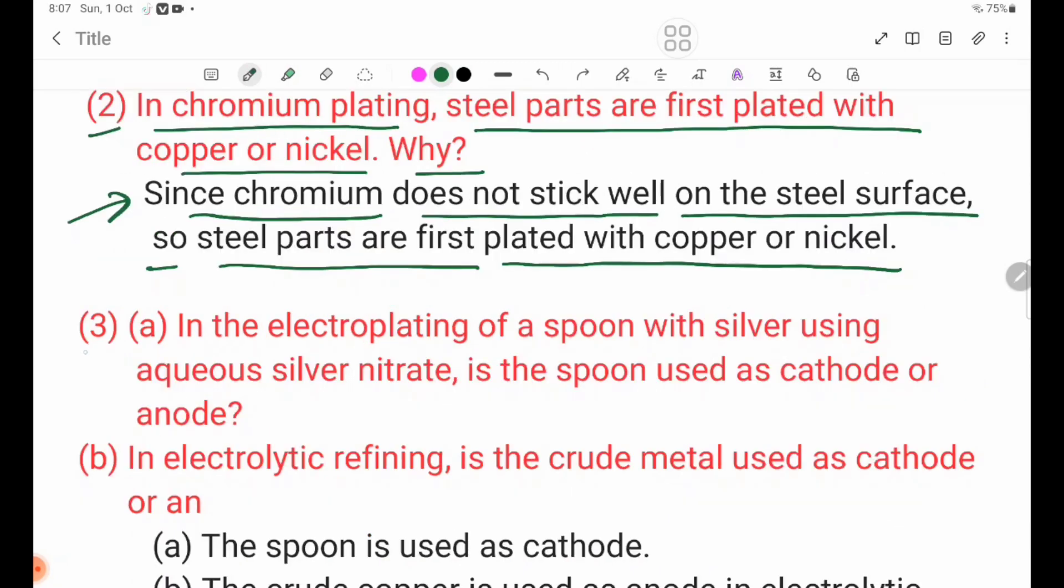Number 3, in the electroplating of a spoon with silver using aqueous silver nitrate, is the spoon used as cathode or anode? Aqueous silver nitrate is used as cathode or anode.